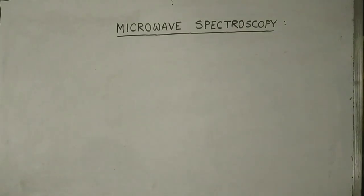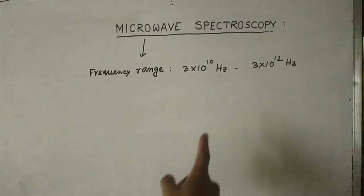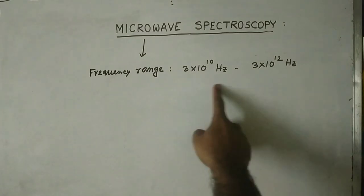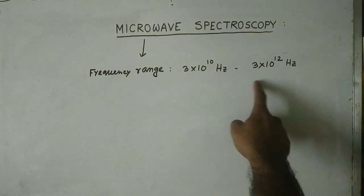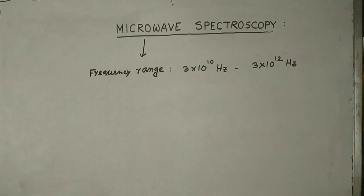What is microwave? Microwave is an electromagnetic radiation in the frequency range 3×10^10 to 3×10^12 Hertz. It has a wavelength around 170 to 100 micrometers.